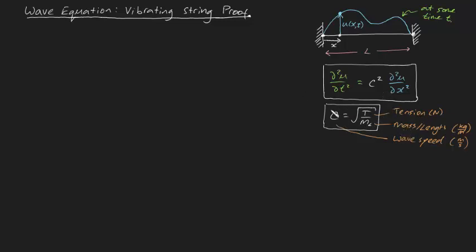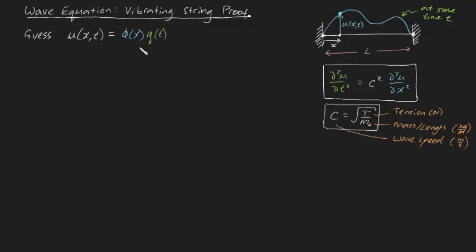That's enough background — let's try and solve this wave equation. The way we're going to solve this is we're going to guess a solution to our one-dimensional wave equation. I'm going to guess that u, which is a function of both x and t, can be written in the form of some arbitrary function of just x — I'll call it phi — multiplied by some arbitrary function of time — I'll call it q.